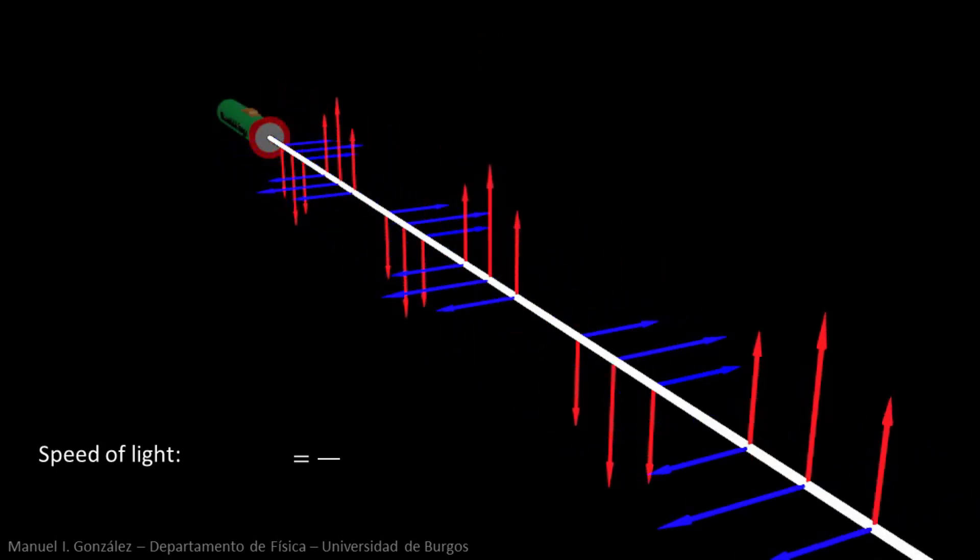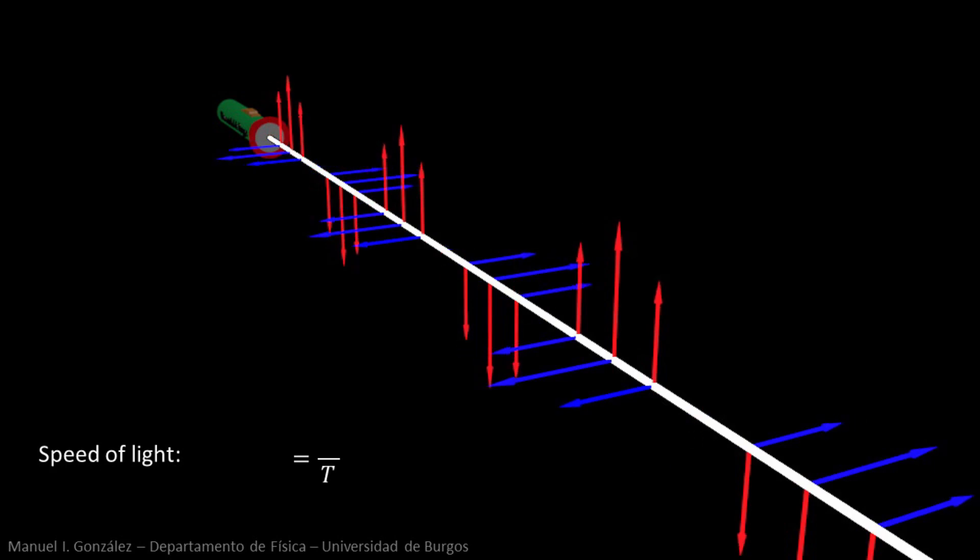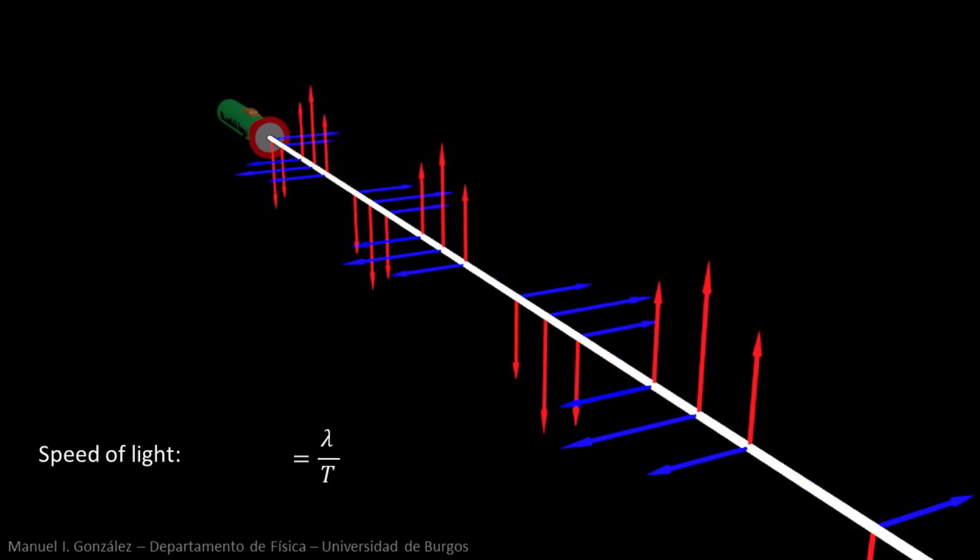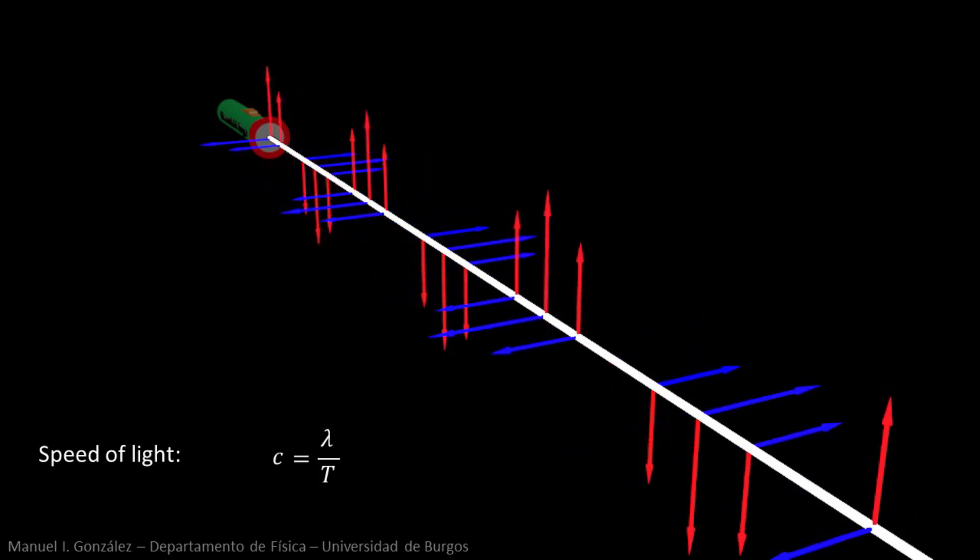Our light wave and the photons take a time t to travel a distance equal to the wavelength. Therefore, the speed of light is the quotient of both quantities.